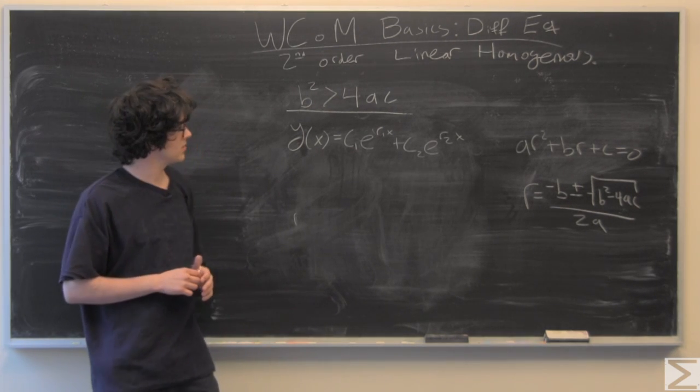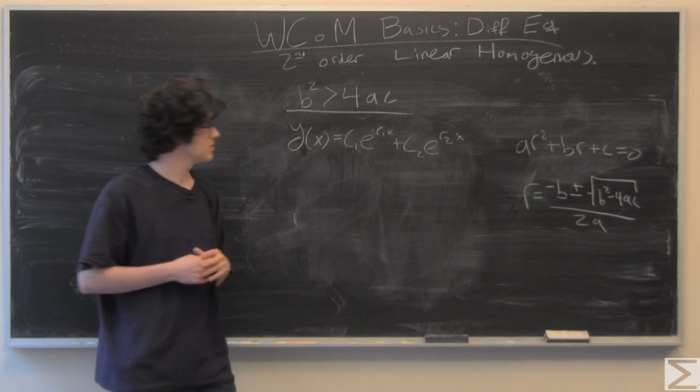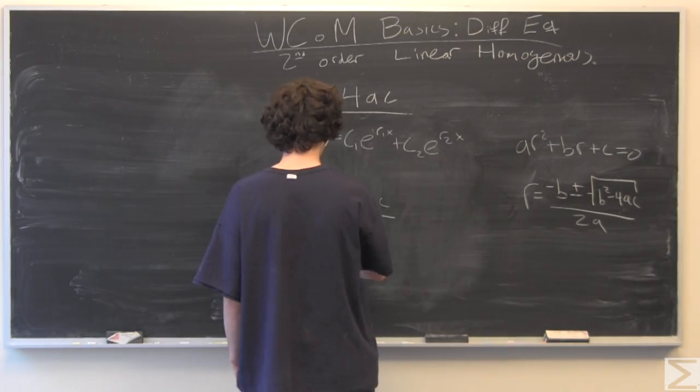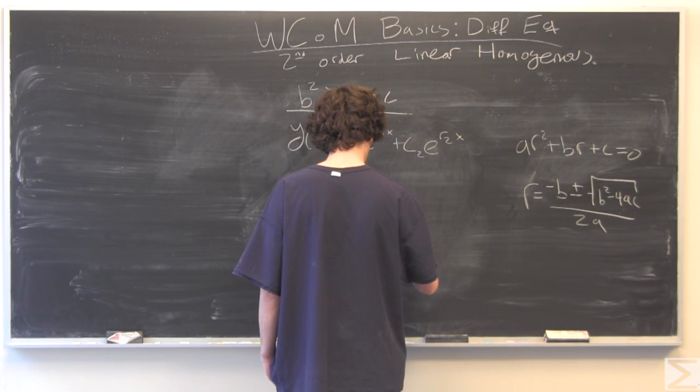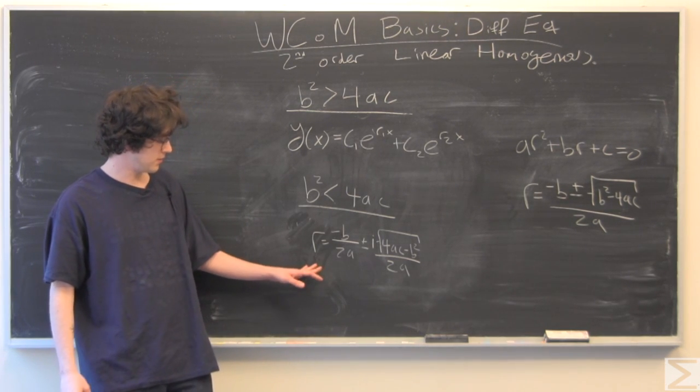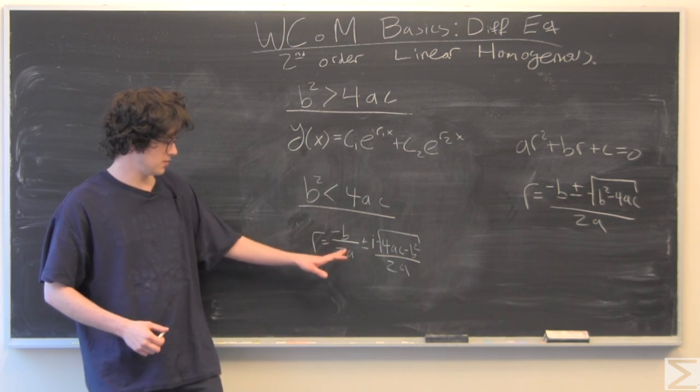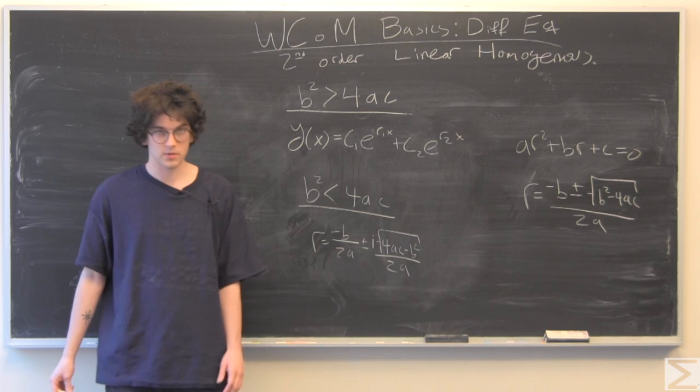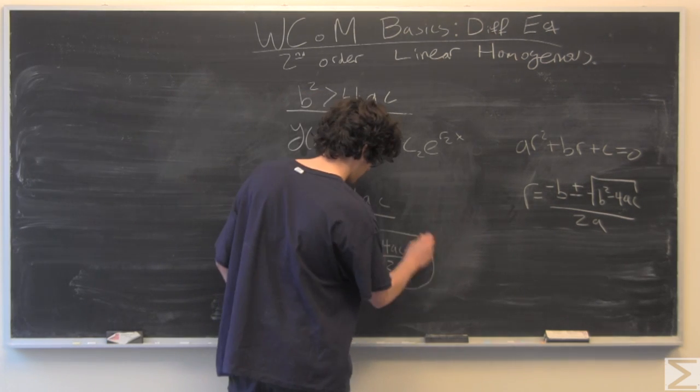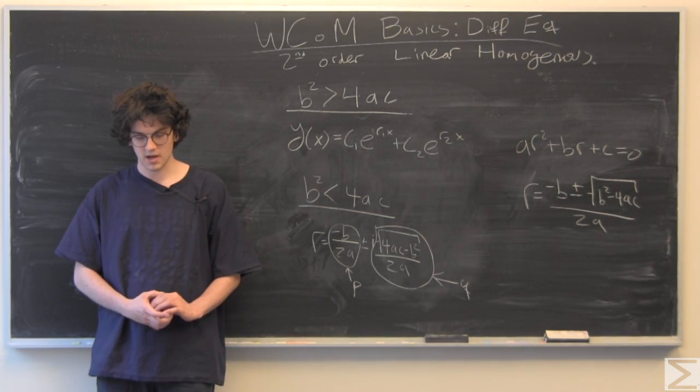The next case is a little trickier. It's when b squared is less than 4ac. You're going to see we have distinct but imaginary roots. I've rewritten the equation to find the roots into a real part and an imaginary part. We're going to rename the real part p, and the imaginary part q.